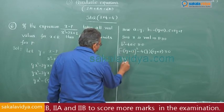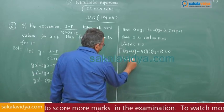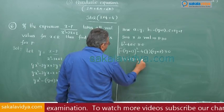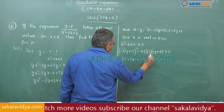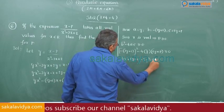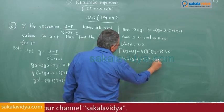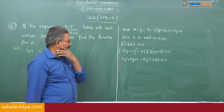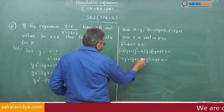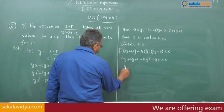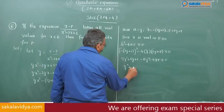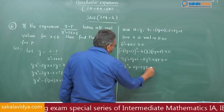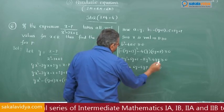Expanding: 9y squared plus 6y plus 4y plus 1 greater than or equal to 0. Simplifying, this becomes: 9y squared plus (6 minus 4p)y plus 1 greater than or equal to 0.